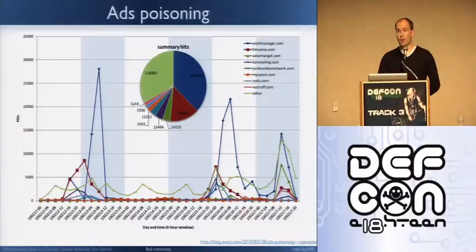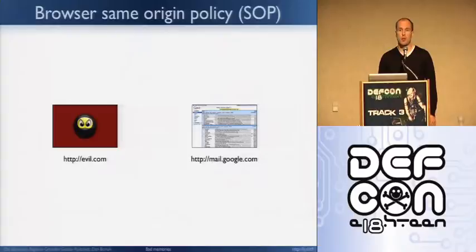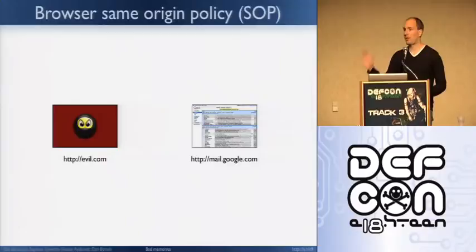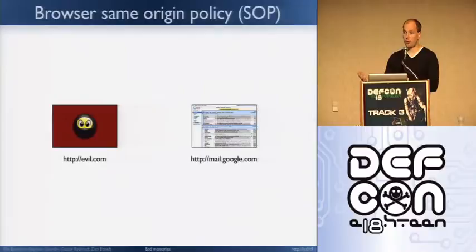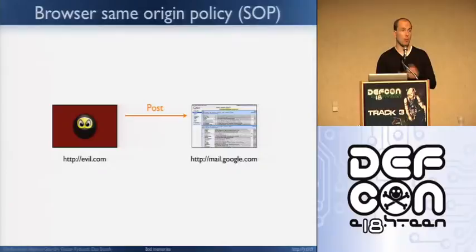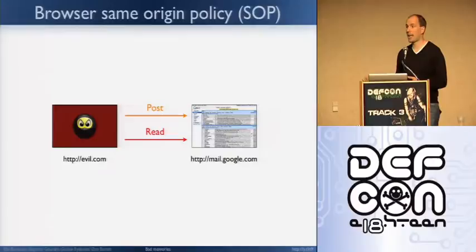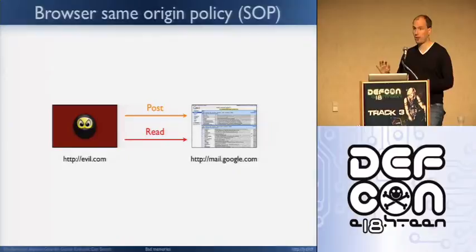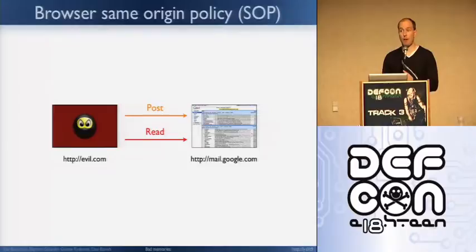How many of you are familiar with the same origin policy? The same origin policy is one of the key security mechanisms in the browser. It's meant to protect you when browsing multiple websites simultaneously — through multiple tabs or iframes. If you have two origins like evil.com and mail.google.com, same origin policy means one origin can post data to another, but you cannot read from the other origin. This effectively prevents a bad guy from reading your Gmail or a malicious page from reading your bank account. We can post data provided there is no CSRF defense, but we can't actually read data — and that makes this attack a little bit harder to work around.